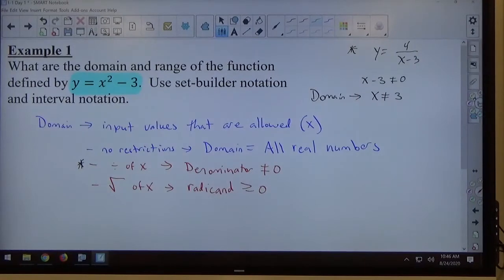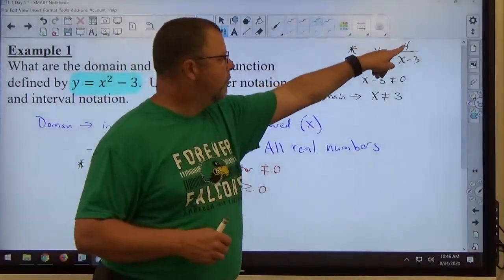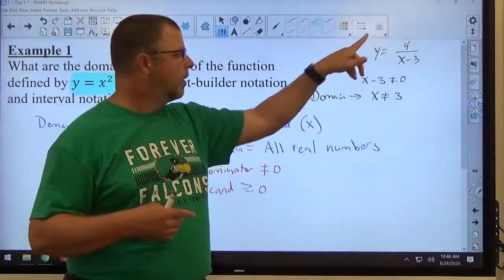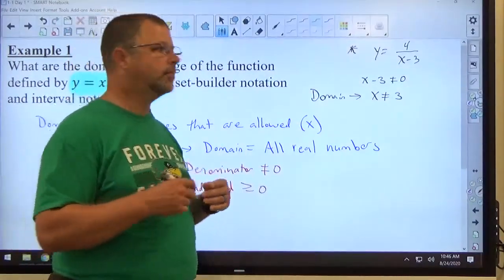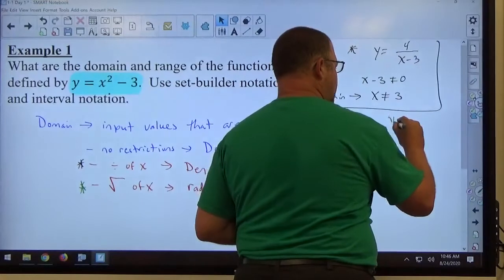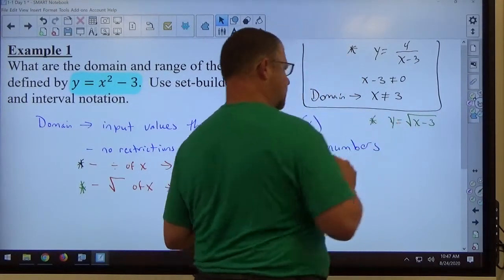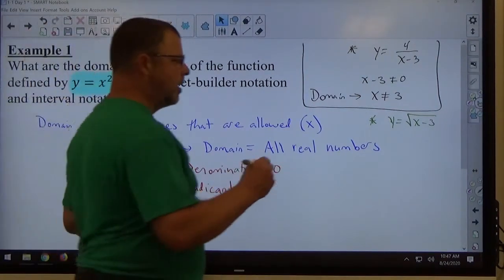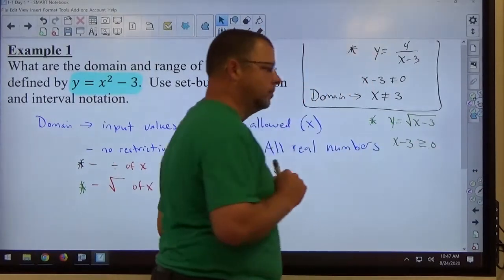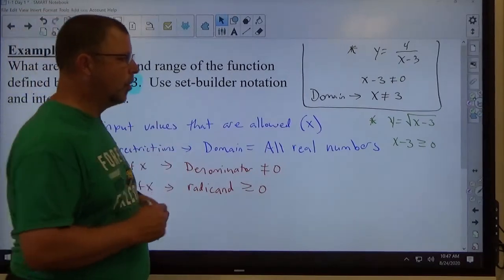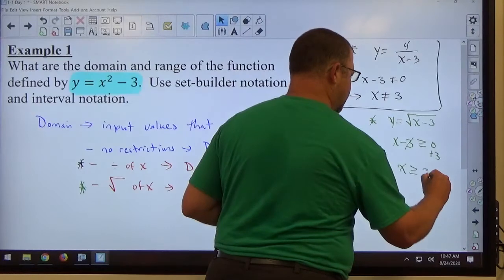All domain is telling you is this is what x is allowed to be or this is what x is not allowed to be. If I have y equals the square root of x minus 3, square root of an x expression. This says the radicand must be greater than or equal to zero. x minus 3 is greater than or equal to zero. If I want to solve that, I simply slide the 3 over, change the sign. x must be greater than or equal to 3. There's the domain.